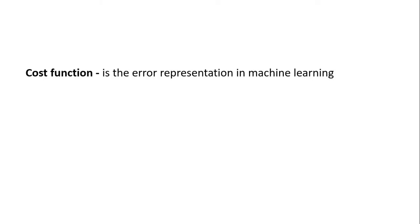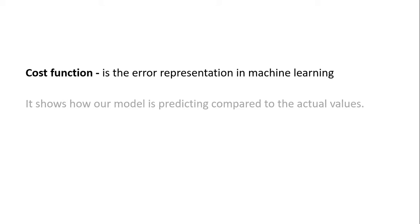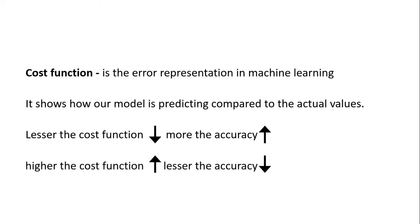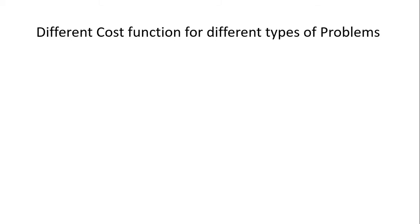Cost function in machine learning is the error representation. It shows how our model is predicting compared to the actual values or actual output labels. Lesser the cost function, more the accuracy of our model, and higher the cost function, lesser the accuracy of our model. In neural networks we use different types of cost functions based on the application we are trying to make or the problem we are trying to solve.